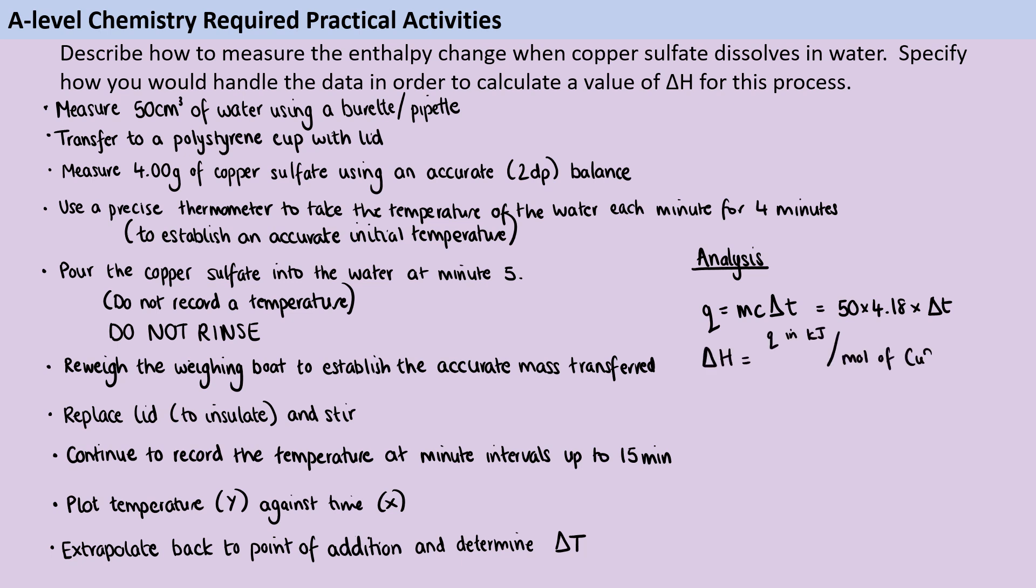Then to work out a value of ΔH, I'm going to need to take that value of Q, the energy change, and convert it to kilojoules because it will be in joules at that point. So I divide it by a thousand and then I need to divide it by the moles of copper sulfate that have been added. To work out the moles of copper sulfate added, I do whatever that accurate mass that I actually transferred was—so here I've said 4.00 grams-ish because that's what I was aiming for, but I might have had some residue, so it might be slightly less—divided by the relative formula mass. Of course, I'm going to need to work out what the relative formula mass is in order to do that.